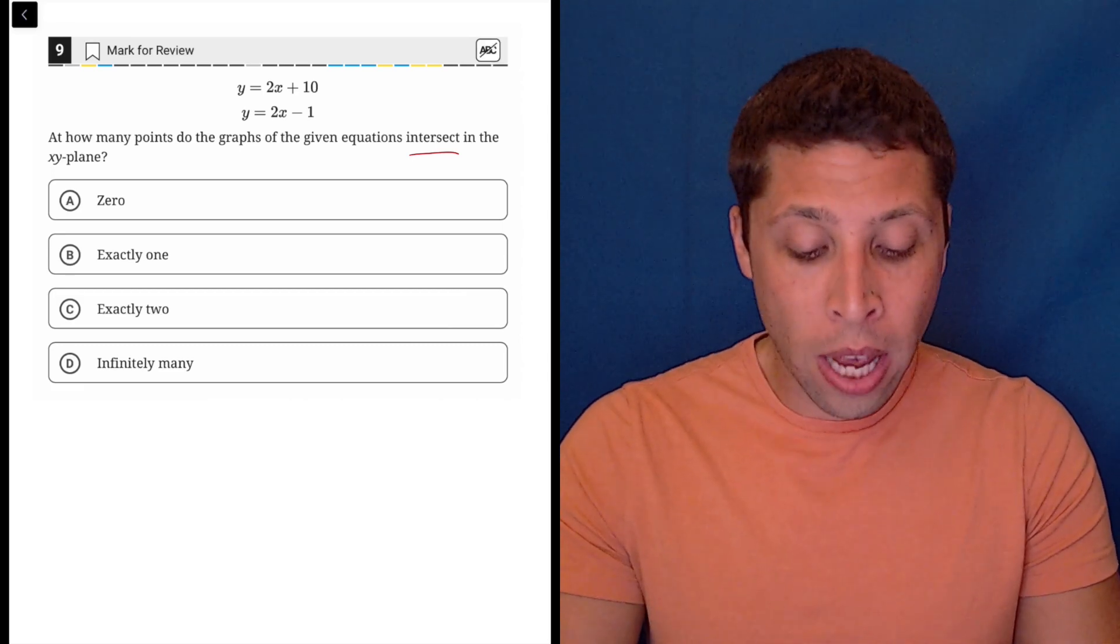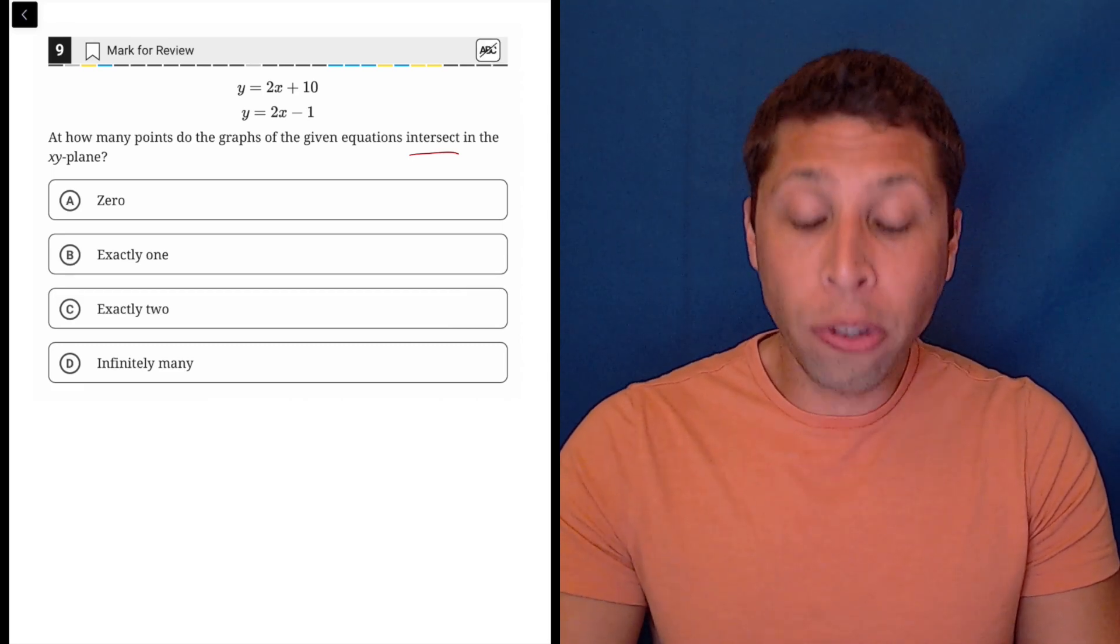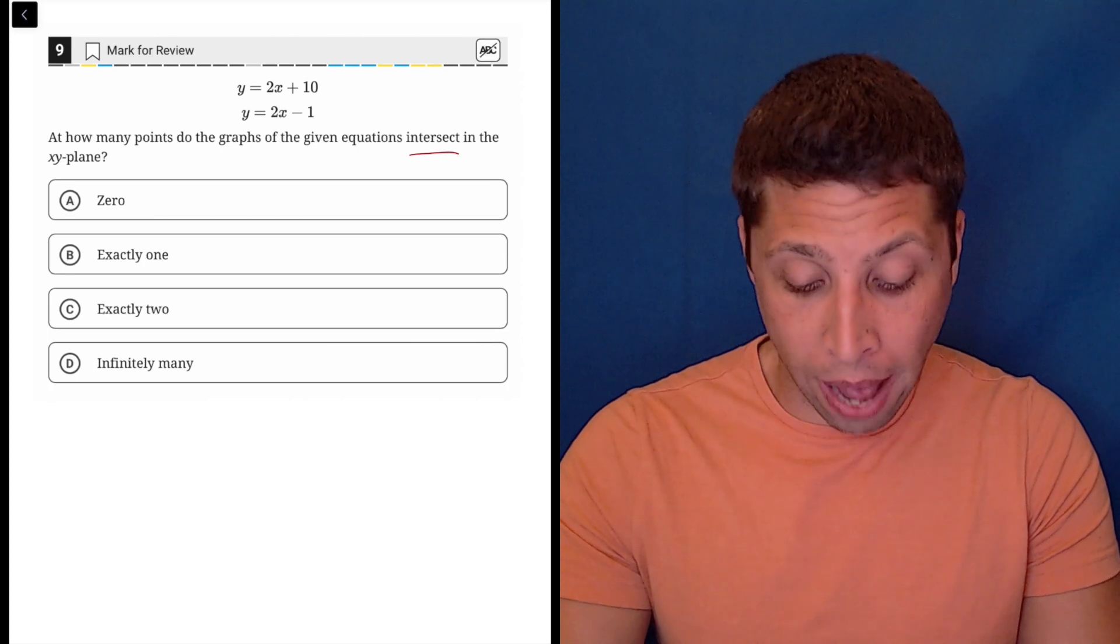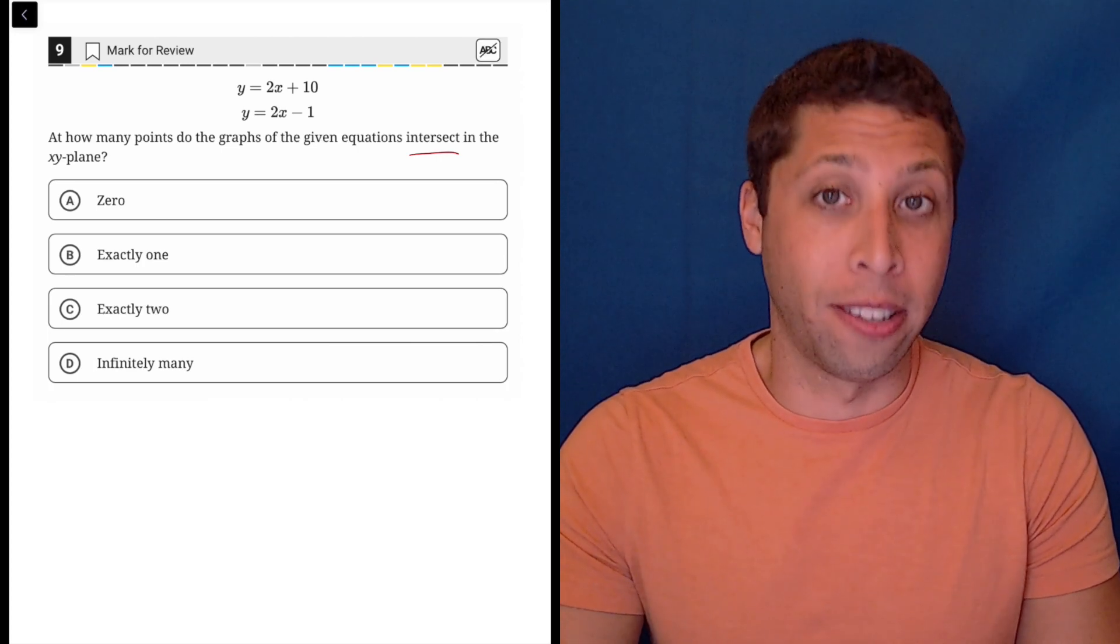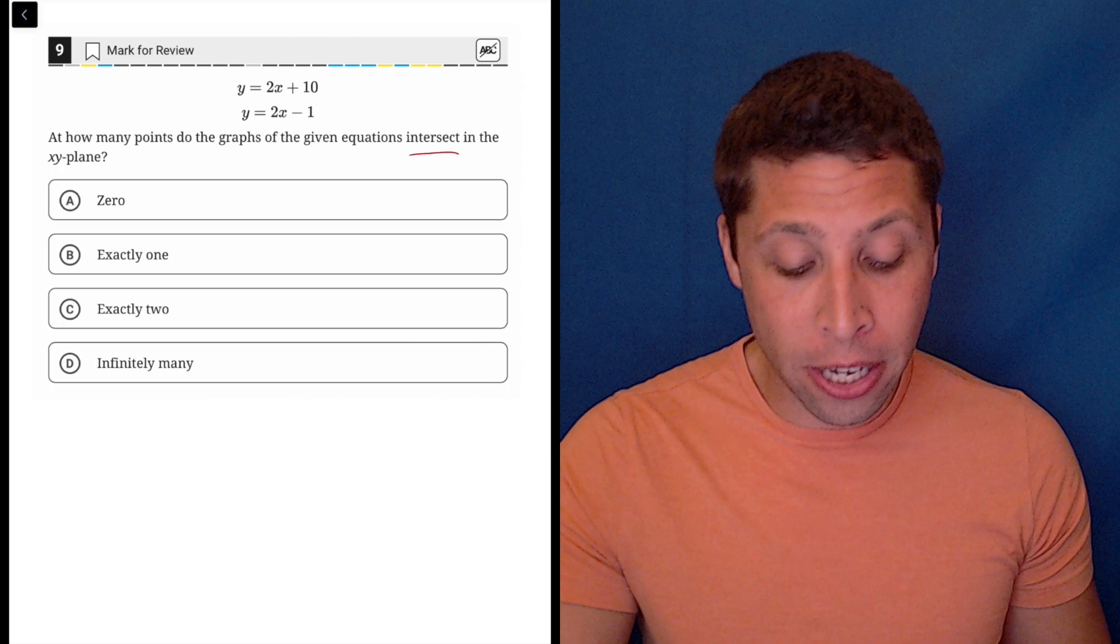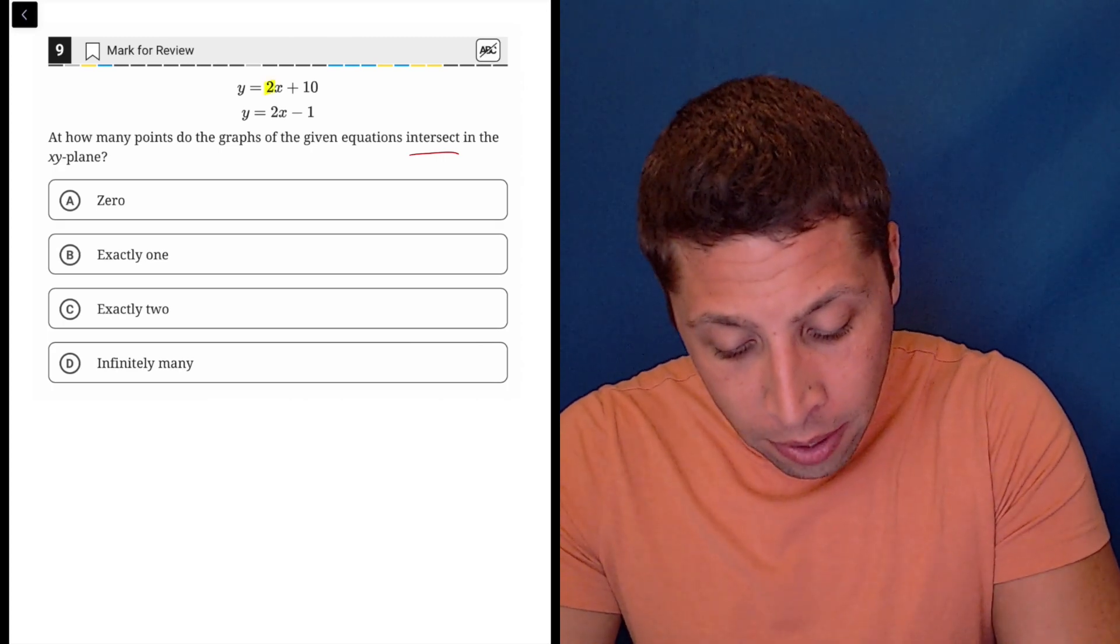Now, these are two linear equations, so this is really easy for us. Most of the time when we have two lines, we're going to have exactly one intersection, but that's not happening here because of the twos.